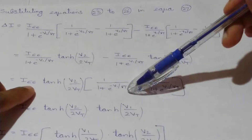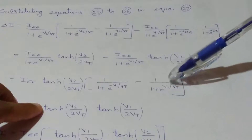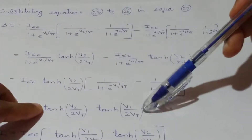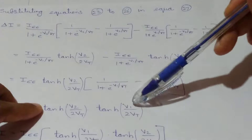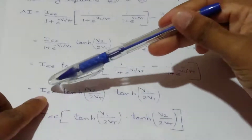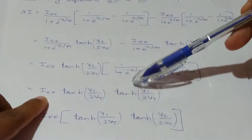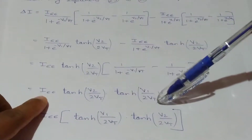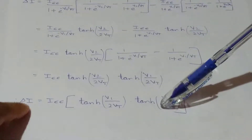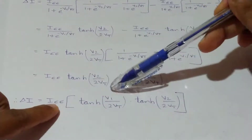Substituting, delta I equals IEE times tanh(V2 over 2Vt) times [1 over (1 + e to minus V1 over Vt) minus 1 over (1 + e to V1 over Vt)], where the bracketed term equals tanh(V1 over 2Vt). Hence delta I equals IEE times tanh(V1 over 2Vt) times tanh(V2 over 2Vt).